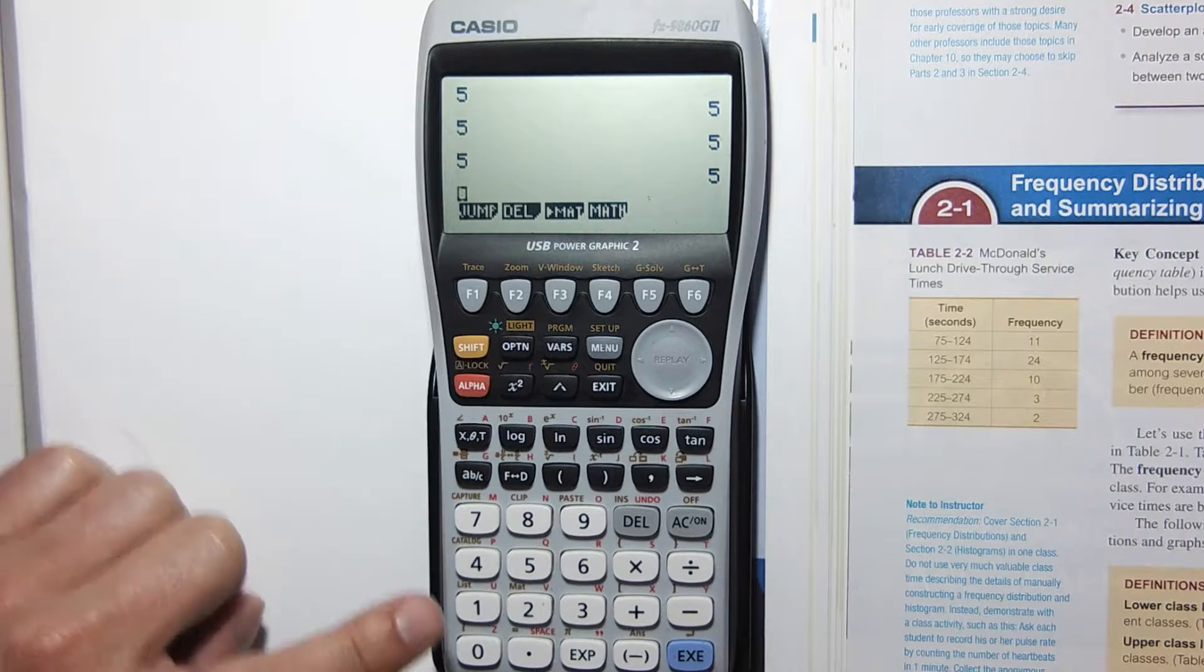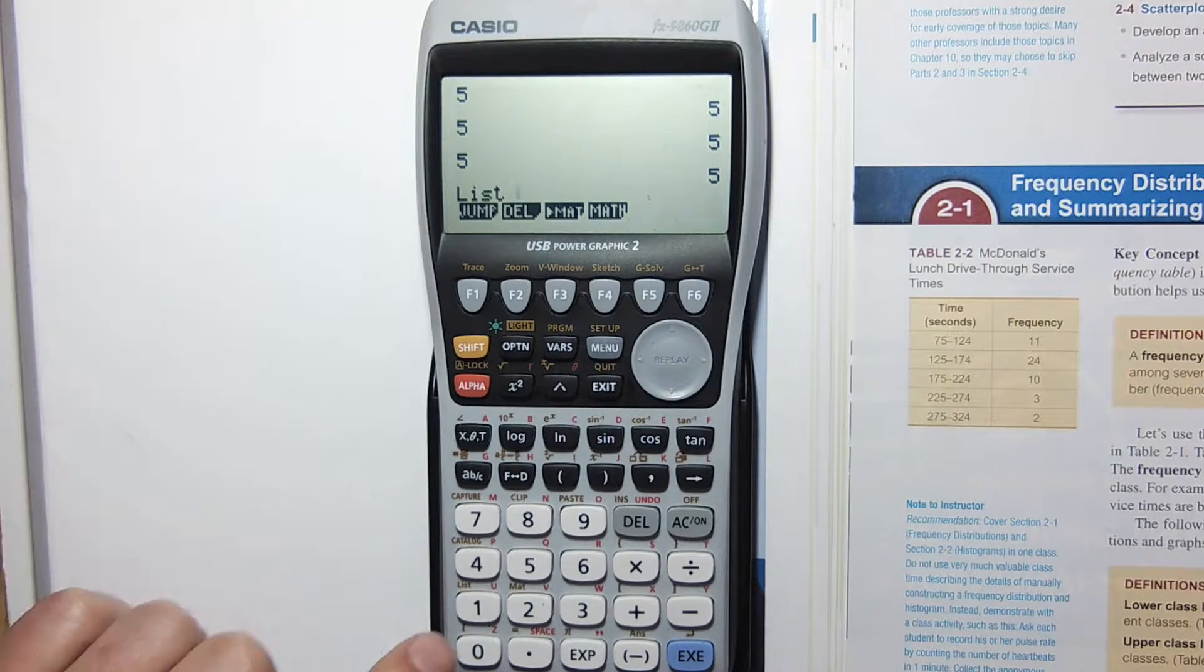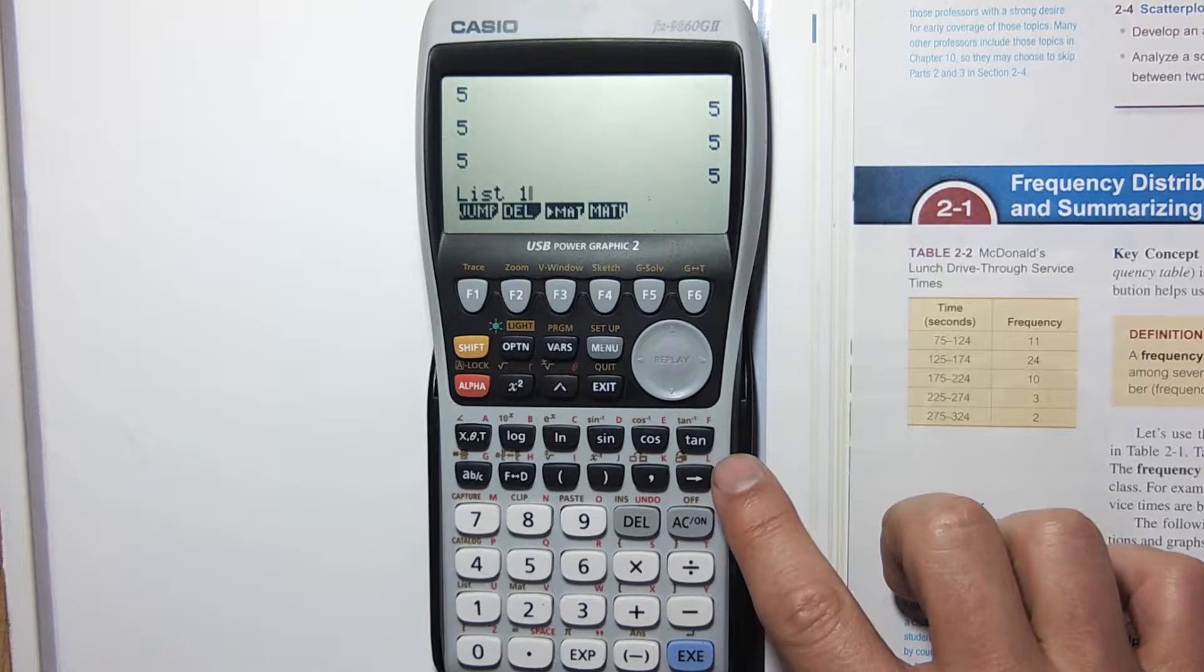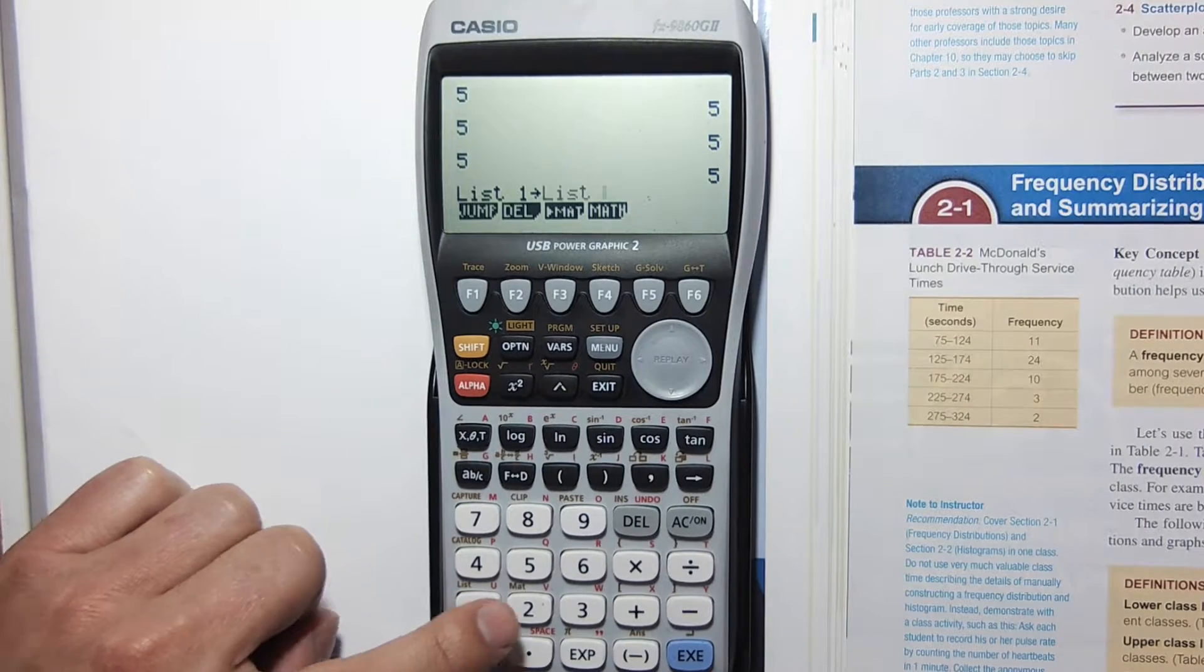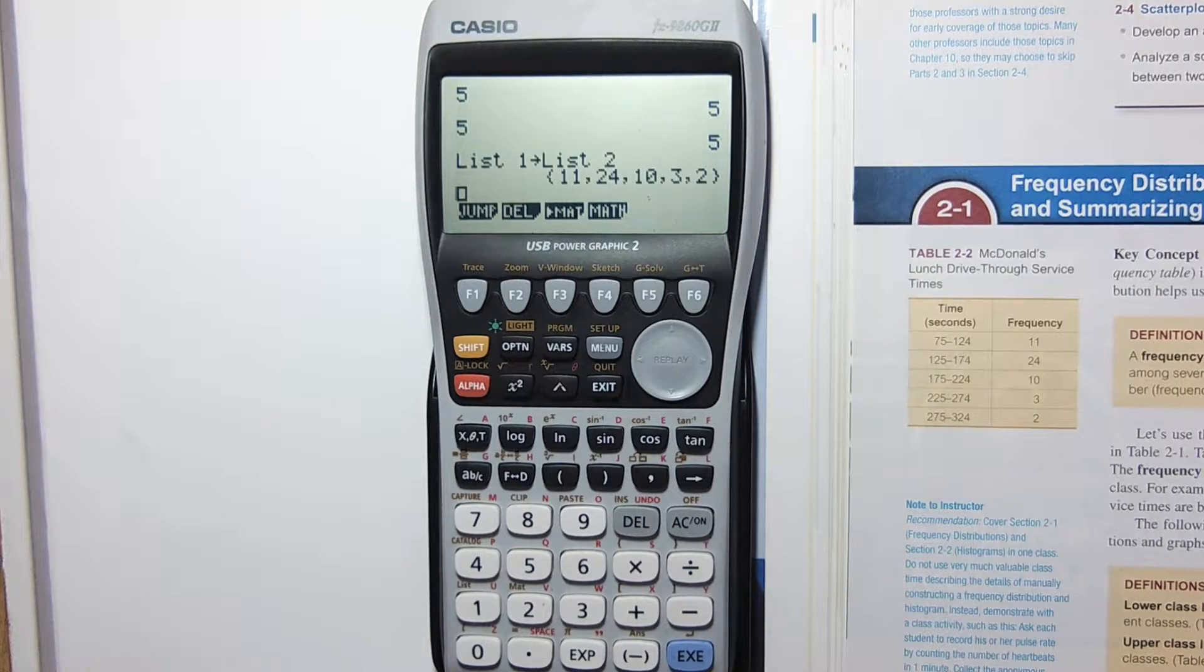I'm going to shift list. I want list 1 to be stored. Here's the store button—this stores into memory. I want list 2. I've now just stored list 1 into list 2.